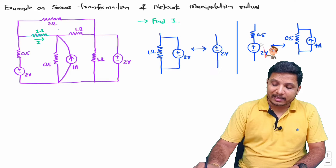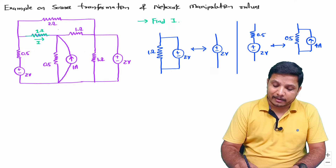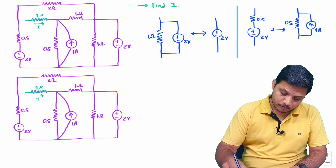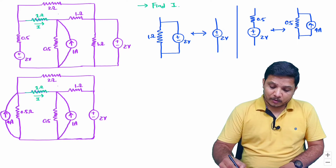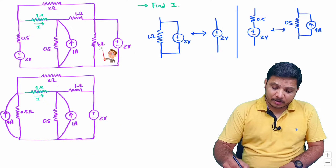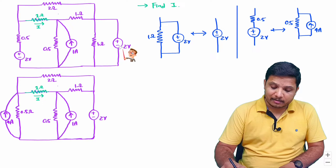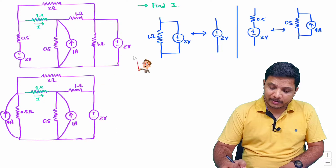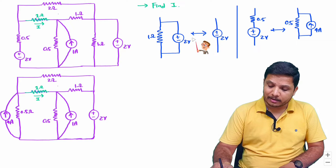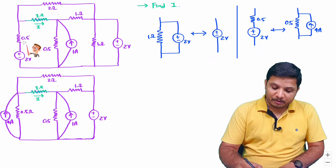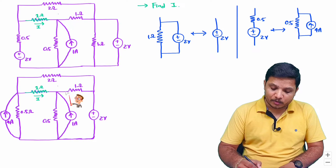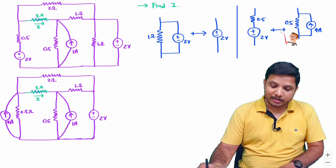So I can replace this combination by a resistor in parallel with the current source. Let me reconnect this into the circuit. Now you can observe: the resistor in parallel with the voltage source is replaced by the voltage source alone, and the source transformation converts the voltage source into a current source.